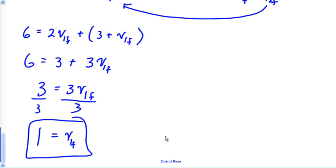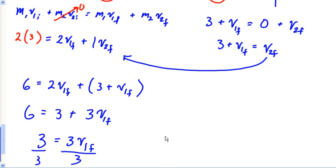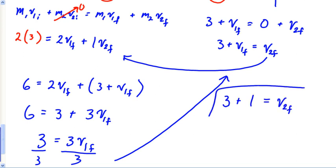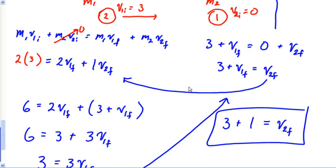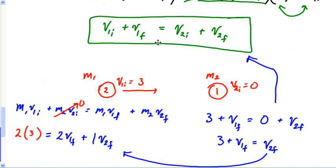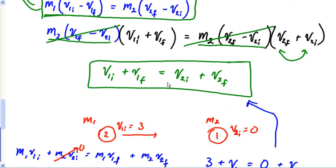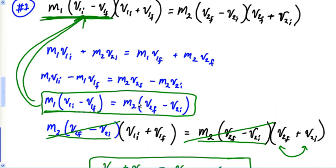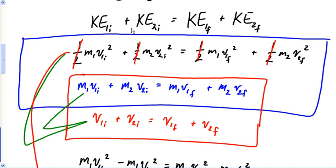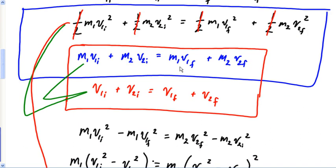Divide both sides by 3, and 1 is my V1F. And if I wanted to find V2F, all I'd have to do is come right back to here, and that would be 3 plus 1. And there's my V2F. This is much, much, much simpler to use this equation combined with your elastic formula way more so than actually trying to start every problem with this idea of conservation of kinetic energy. But anyway,